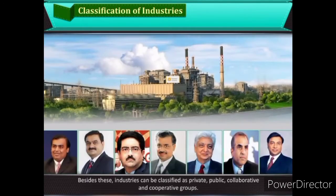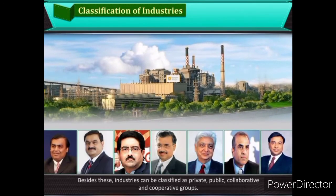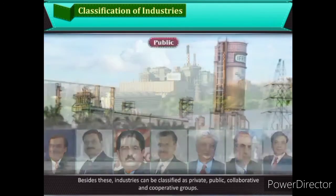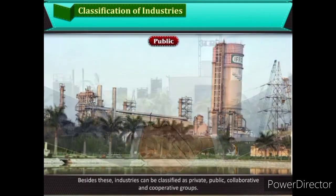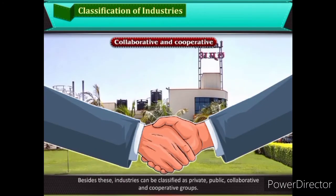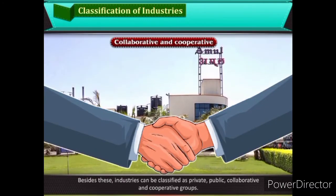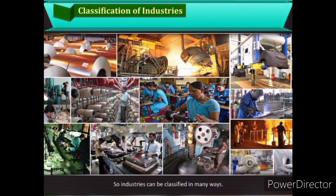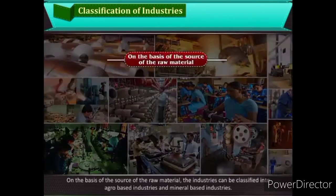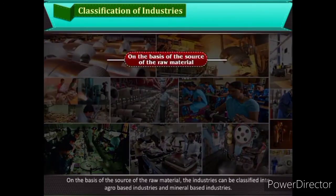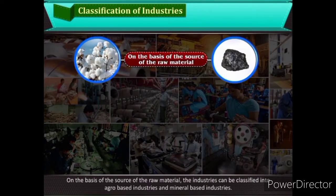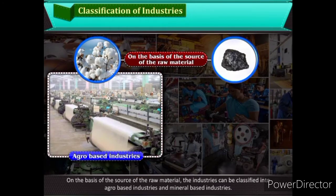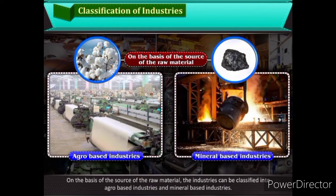Besides these, industries can be classified as private, public, collaborative, and cooperative groups. So industries can be classified in many ways. On the basis of source of raw material, the industries can be classified into agro-based industries and mineral-based industries.